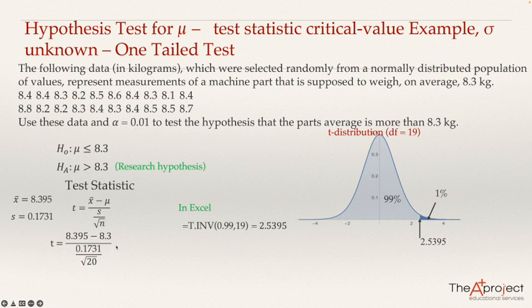So let's compute it. When I computed, the answer was 2.4543. And 2.4543 is lower than 2.5395. So it will be a number like here. So we are in the acceptance area. We are not in the rejection area. So we fail to reject the null hypothesis.